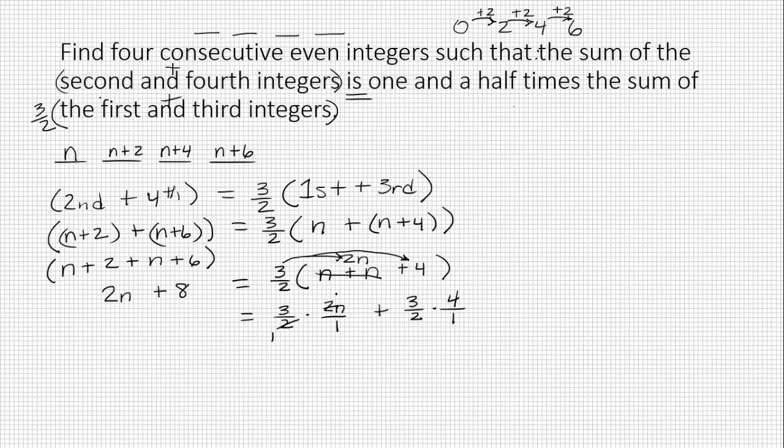Two goes into two once. Two goes into two once. And so that simplifies to three n. Over here, two is a factor of both of these, so we reduce by two. And we're left with six.